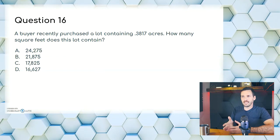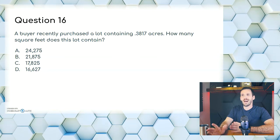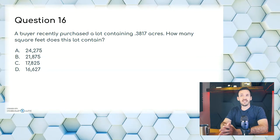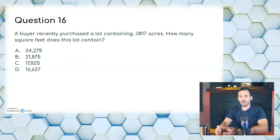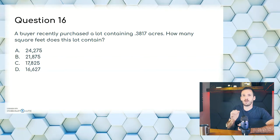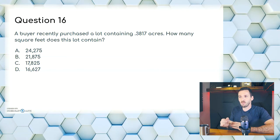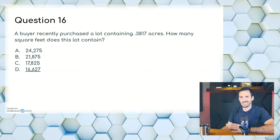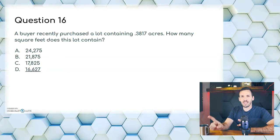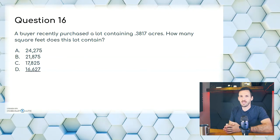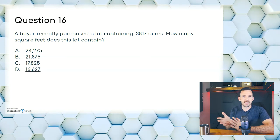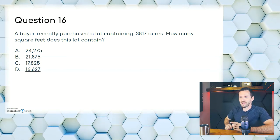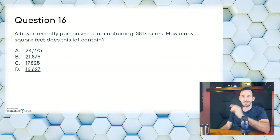Question sixteen: a buyer recently purchased a lot containing 0.3817 acres. How many square feet does this lot contain? A, 24,275; B, 21,875; C, 17,825; or D, 16,627. This is straightforward — you take 43,560 square feet, which is the number in an acre, and multiply by 0.3817 to get the final answer of D, 16,627. I don't remember the mnemonic for memorizing 43,560 — someone left it in my comments below. Comment down below and I'll pin it so we can all remember that.